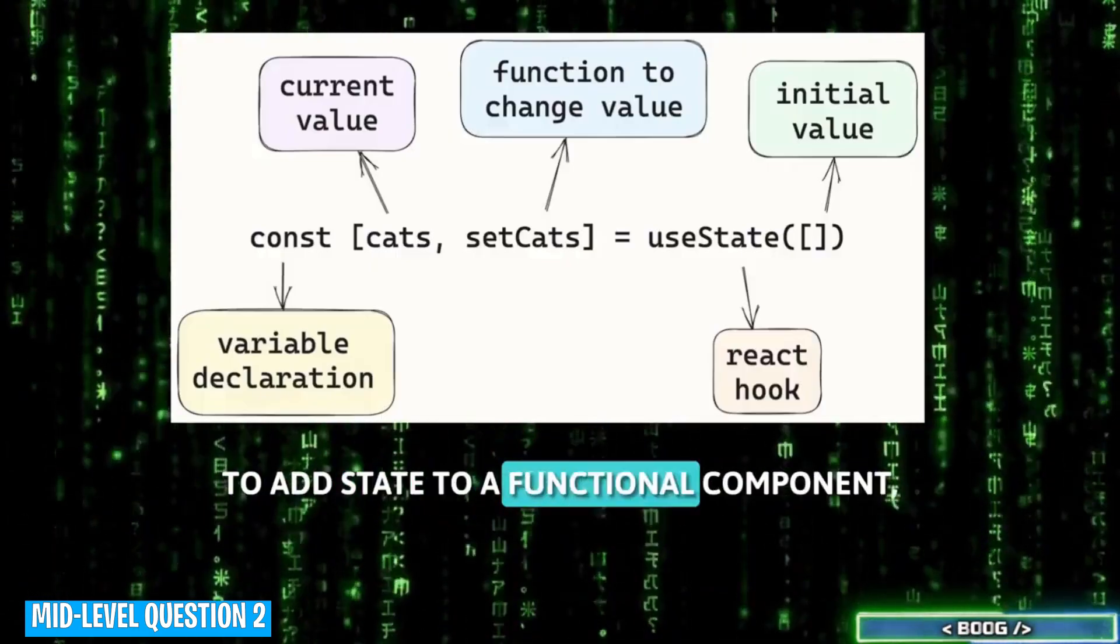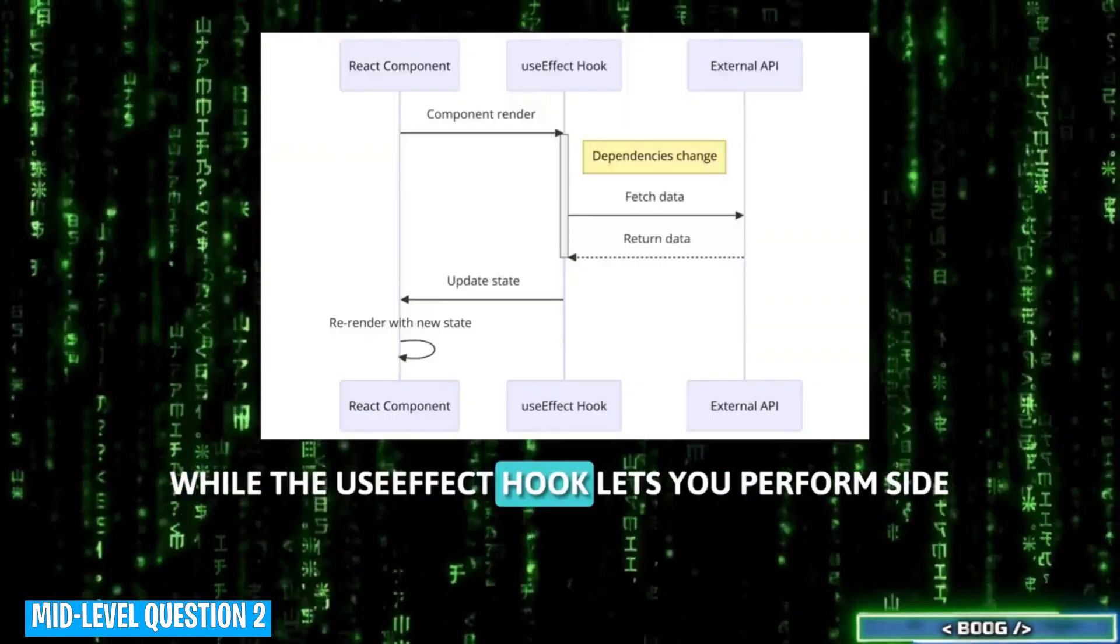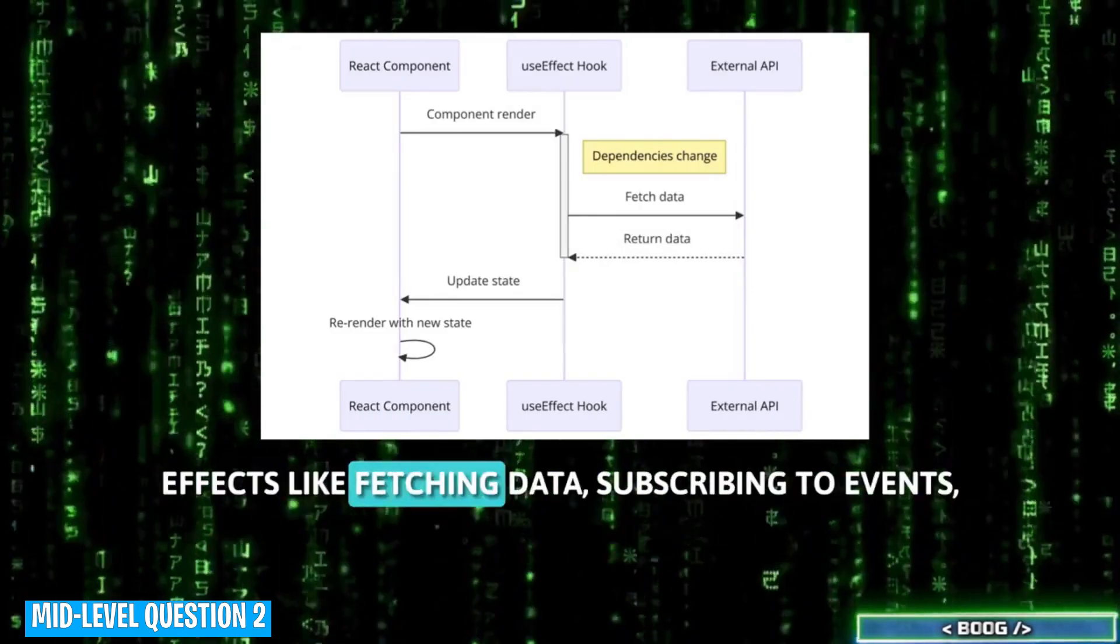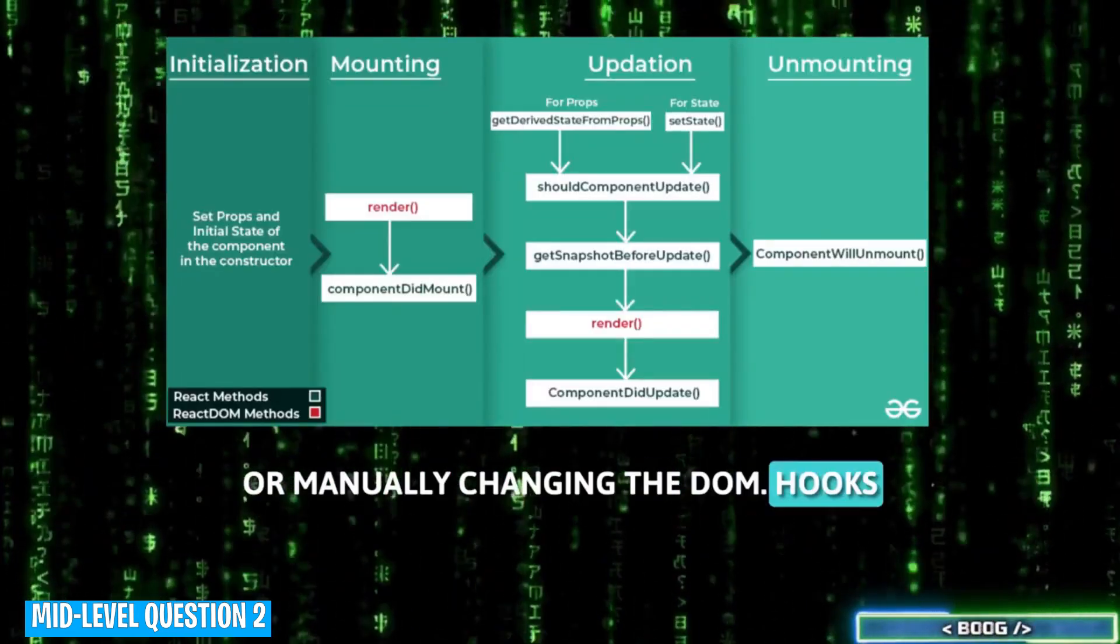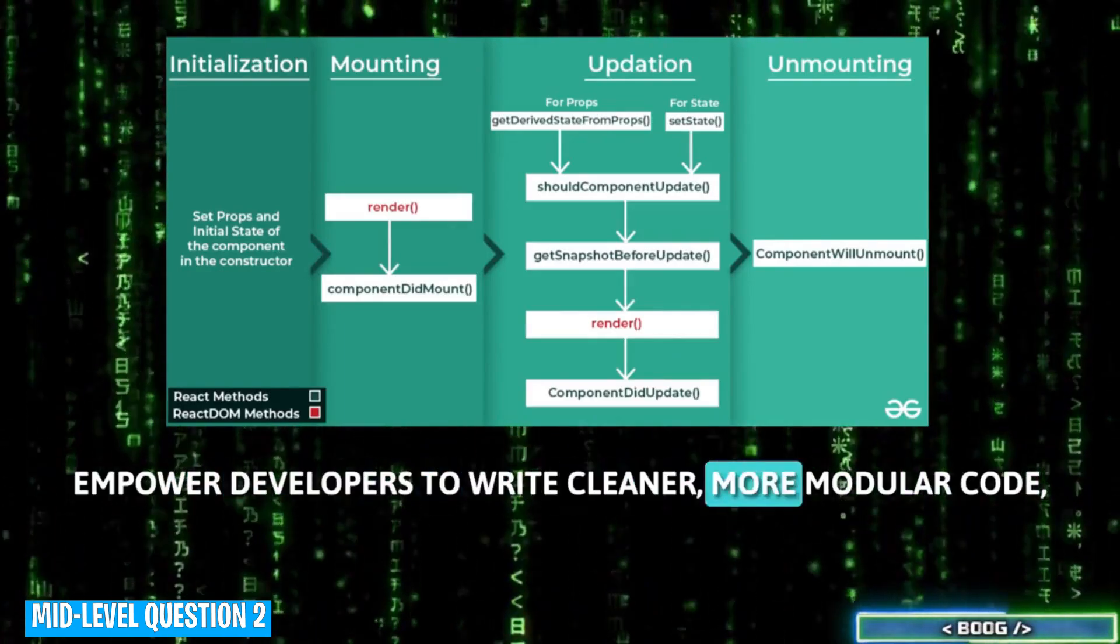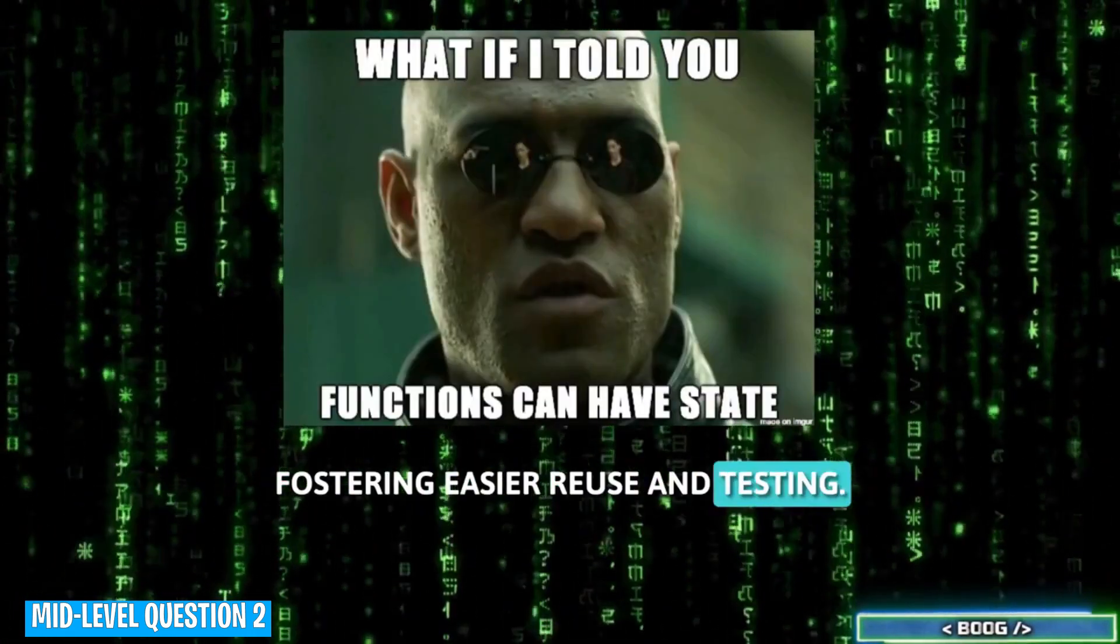the useState hook allows you to add state to a functional component, while the useEffect hook lets you perform side effects like fetching data, subscribing to events, or manually changing the DOM. Hooks empower developers to write cleaner, more modular code, fostering easier reuse and testing.